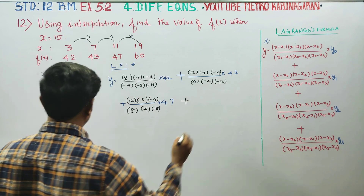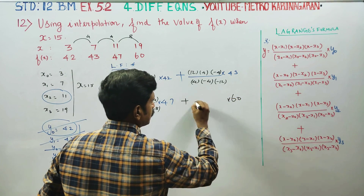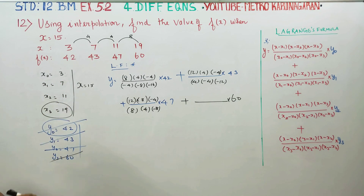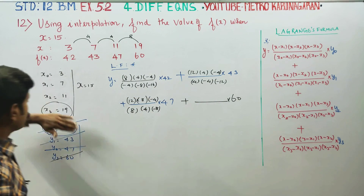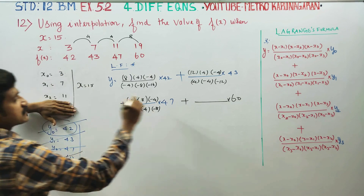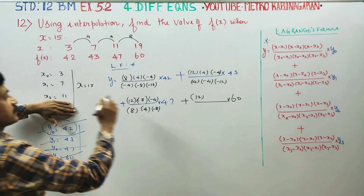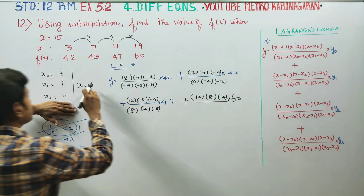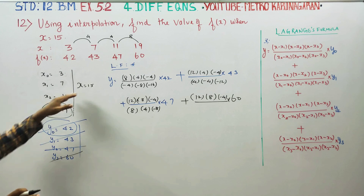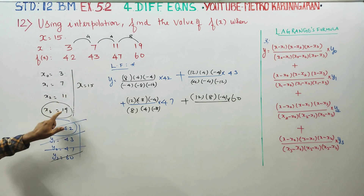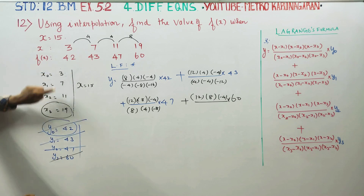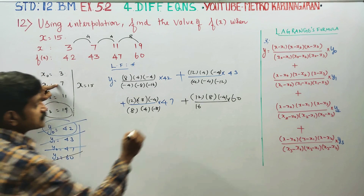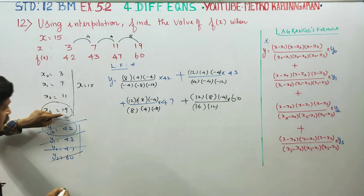For the y3 term: y3 is 60. The numerator: 15 minus 3 equals 12, 15 minus 7 equals 8, 15 minus 11 equals minus 4. The denominator: 19 minus 3 equals 16, 19 minus 7 equals 12, 19 minus 11 equals 8.